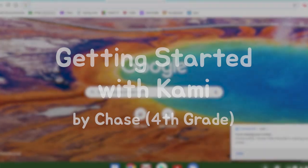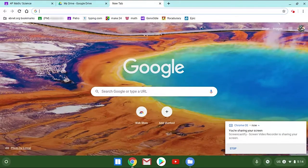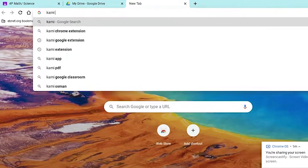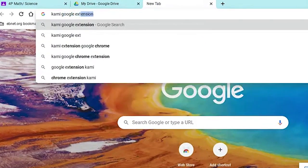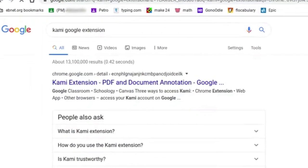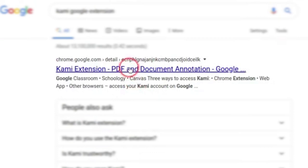Today I'm going to show you how to use Kami on PDFs. Type in Kami Google Extension. Once you go into that, you're going to hit Kami Extension PDF and Document.